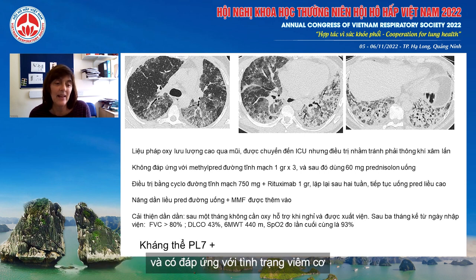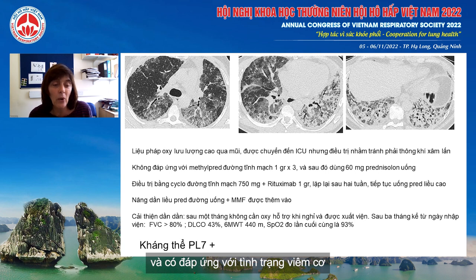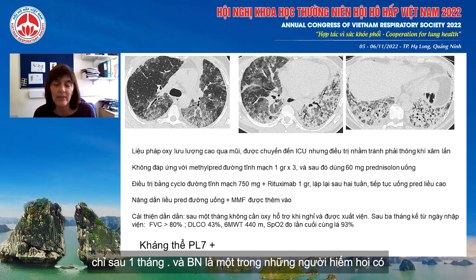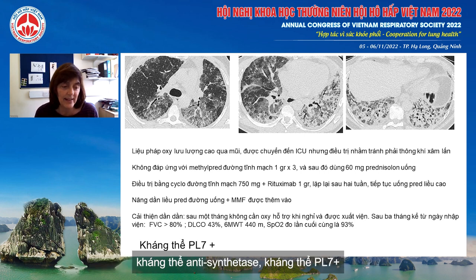The results of the extended myositis screen came back after a month: he had one of the rarer antisynthetases — the PL7 antibody.